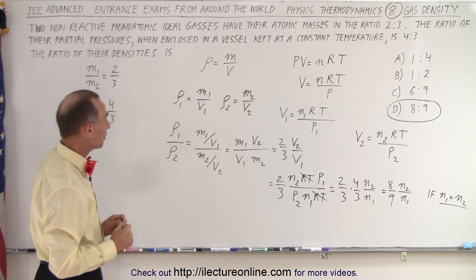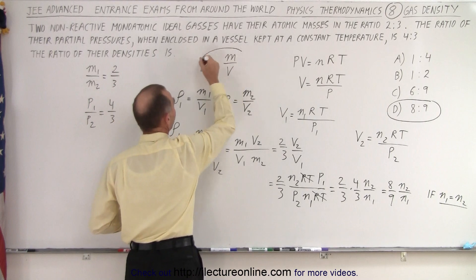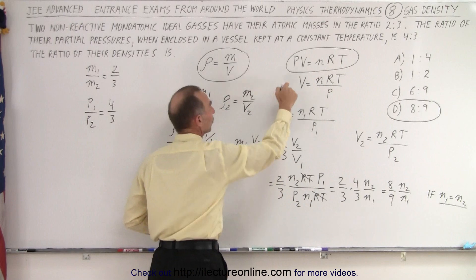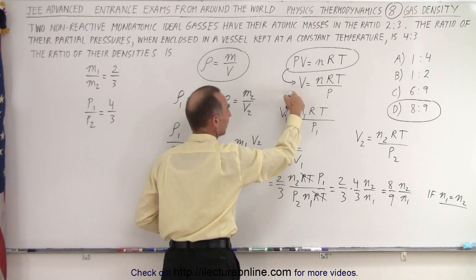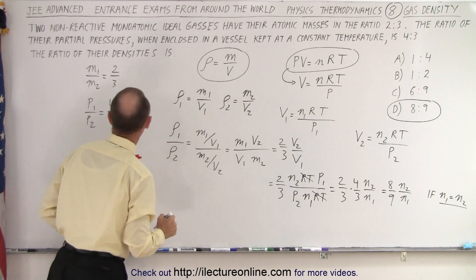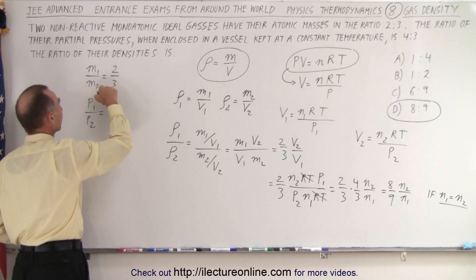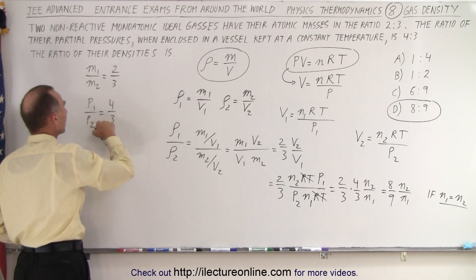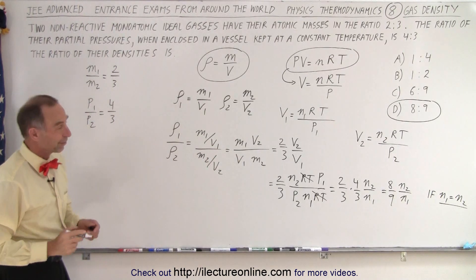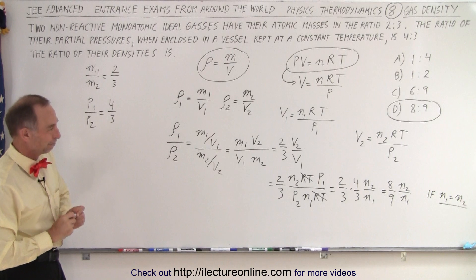Now, quick review. Again, we start with the definition of density. We start with the ideal gas equation. We solve that ideal gas equation for V so we can have the ratio of V1 to V2, which is what we need. And mass ratio is given, and P1 to P2 is given as well. When you plug everything in, you get the answer. And that is how we do that.